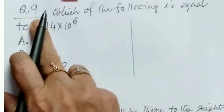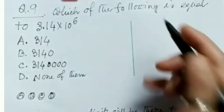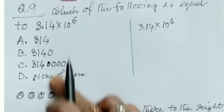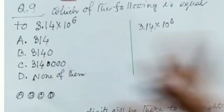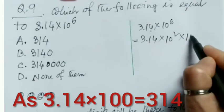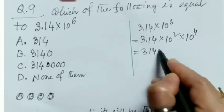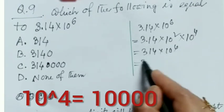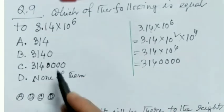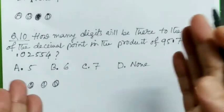Question number nine: which of the following is equal to 3.14 × 10⁶? We remove the decimal point by multiplying by 10², keeping the remaining 10⁴ separate, so it becomes 314 × 10⁴, which equals 3,140,000 — four zeros appended to 314. The answer is option C.